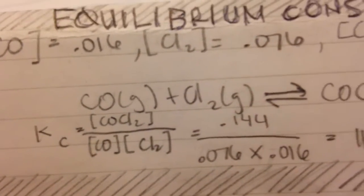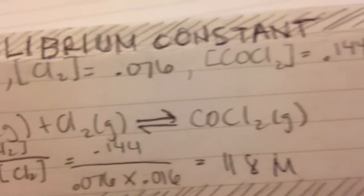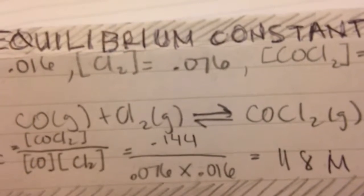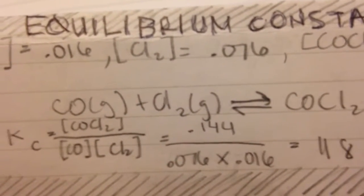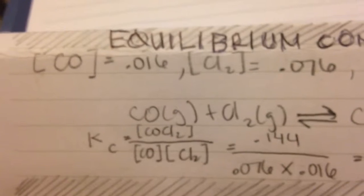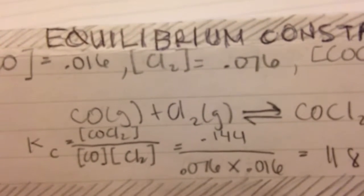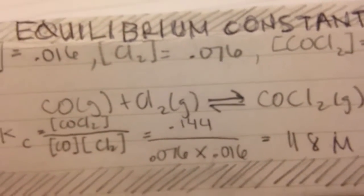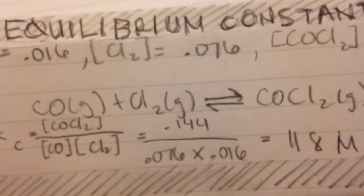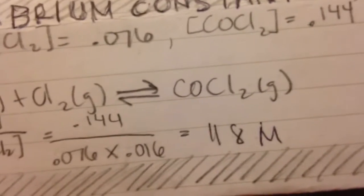So we plug in our values. 0.144 is our value for Cl3 on top, and then we have our two reactants on the bottom: Cl at 0.016 and Cl2 at 0.076. This gives us an equilibrium constant of 118 molars.